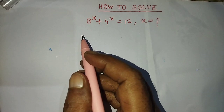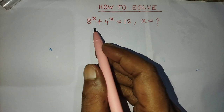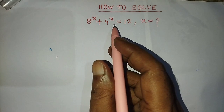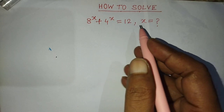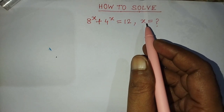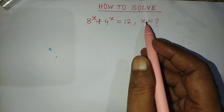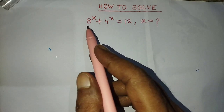Hi guys, welcome back to my channel, Alim Mesh Vlog. So my dear student, today our question is: if 8 to the power x plus 4 to the power x is equal to 12, then find the value of x. In this video I will tell you how to find the value of x from this exponential equation.